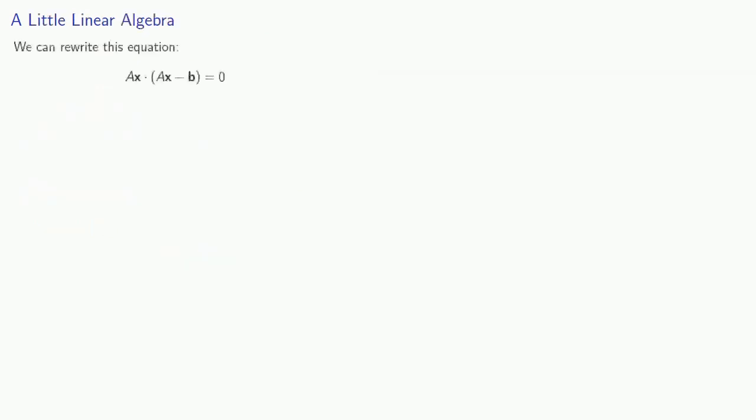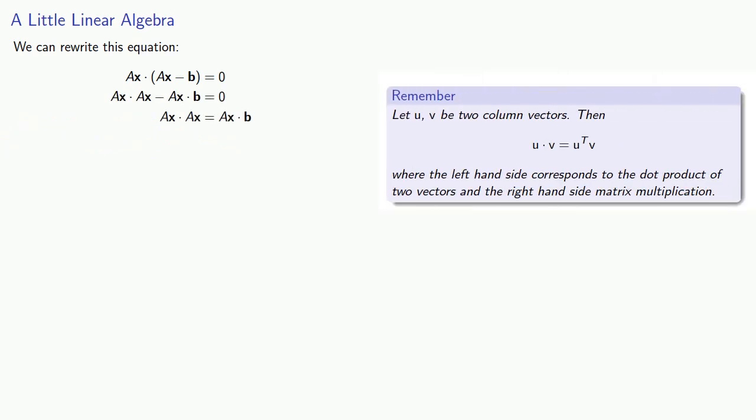Let's rewrite this equation. So I can distribute the dot product, rearrange my equation slightly. And so let's think about this. If u and v are two column vectors, I can express the dot product as the matrix product, u transpose v.